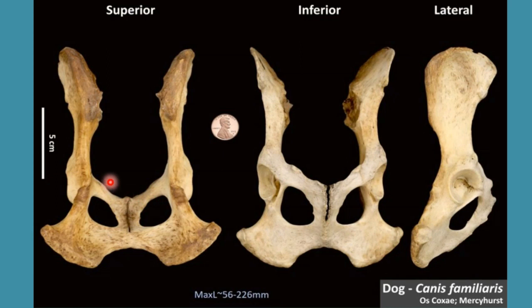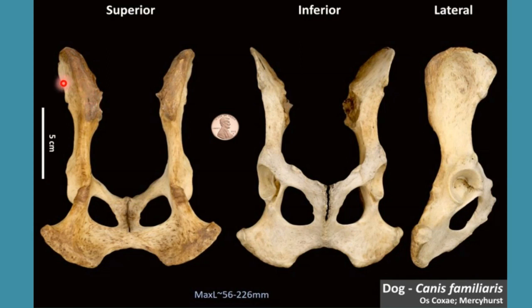Each hip bone further contains three flat bones, and these are ilium, ischium, and pubis. First I am going to discuss the anatomy of ilium. Ilium is the largest and most cranial part of Os Coxae of dog. It is roughly triangular in shape and contains two surfaces and three borders.